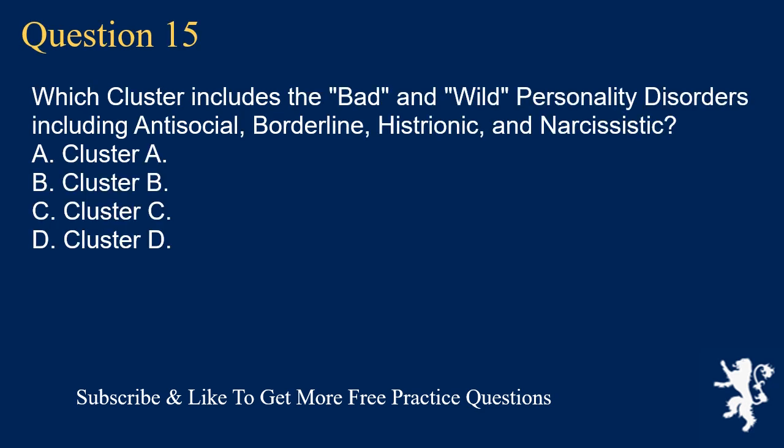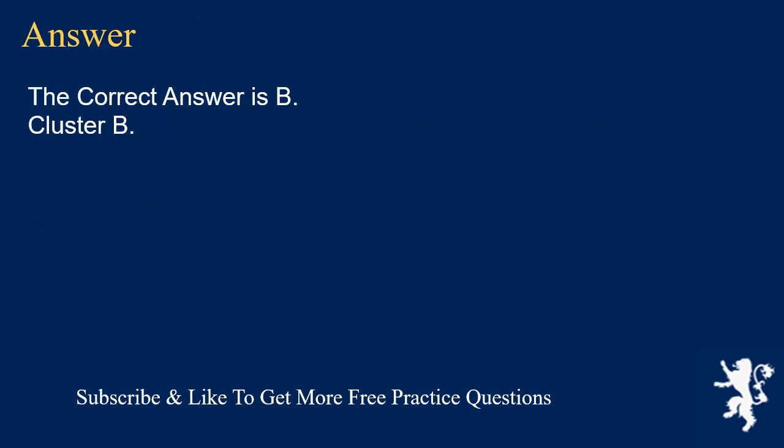Question 15. Which cluster includes the bad and wild personality disorders including antisocial, borderline, histrionic, and narcissistic? A. Cluster A. B. Cluster B. C. Cluster C. D. Cluster D. The correct answer is B. Cluster B.